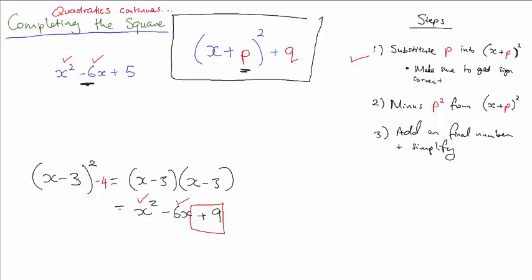Because here, look, if this thing equals that, then if you minus 4 from it, can you see that's just basically a cancel to a plus 5? So that literally is it. If you want to complete the square for this, it's x minus 3 squared minus 4.